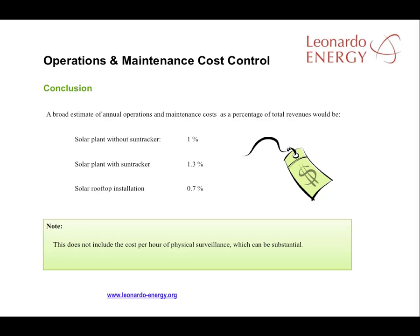As a rough guide, the annual maintenance and operational costs will consume around 1% of total revenues at solar plants without solar trackers. That rises to 1.3% for plants with solar trackers. For solar roofs, annual maintenance costs will be around 0.7% of revenues. These calculations do not take account of the cost of physical surveillance, and assume a cost per hour for a guard from an outsourced company to be around €1 per hour — a figure drawn from Spain costs in 2010.